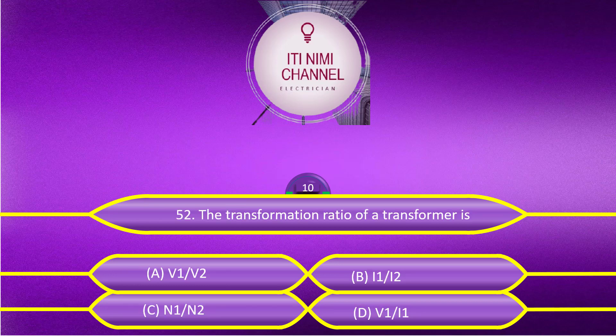The transformation ratio of a transformer is: Option A, V1/V2. Option B, I1/I2. Option C, N1/N2. Option D, V1/I1.